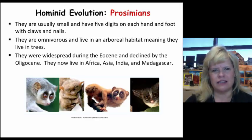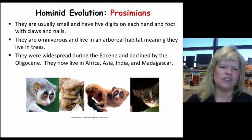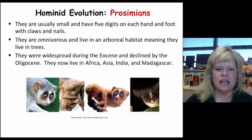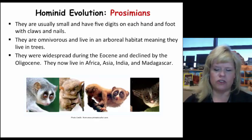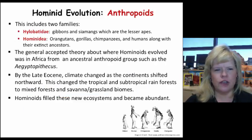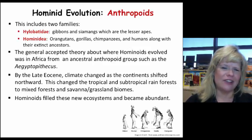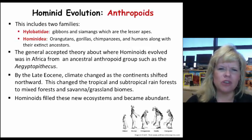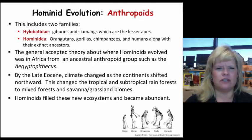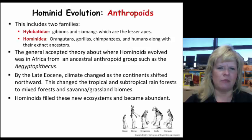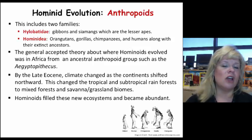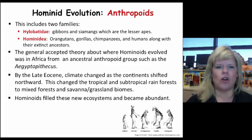You'd find prosimians today in continents like Africa, Asia, India, and Madagascar is probably the most famous. Anthropoids are divided into two families: Hylobatidae and Hominidae, and we fall in the latter. Gibbons, siamangs, and lesser apes make up Hylobatidae, with distinctive skeletal features in the skull, arms, and frame. In our group and family, you'll find orangutans, gorillas, chimpanzees, and us — humans — but don't forget about our extinct ancestors.